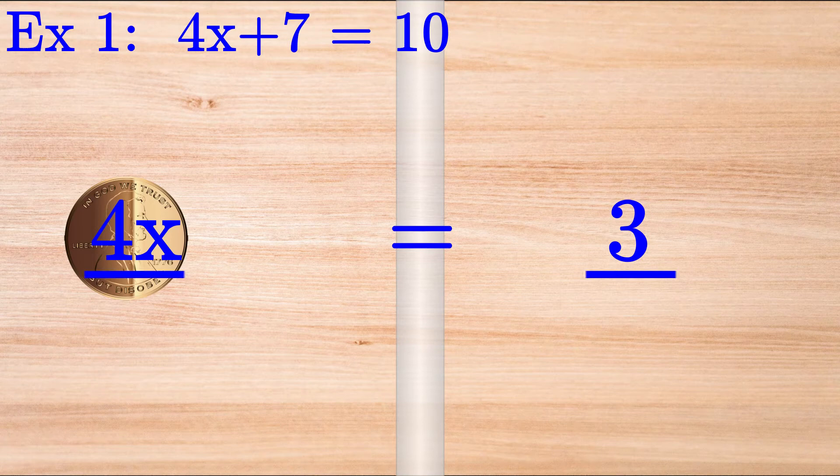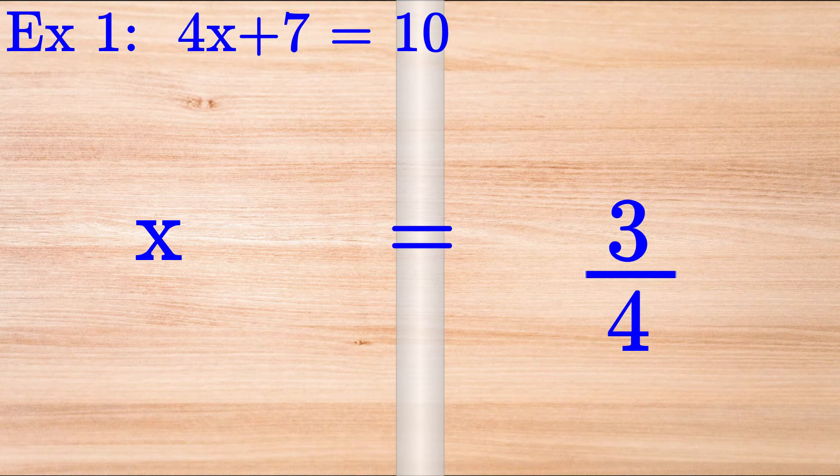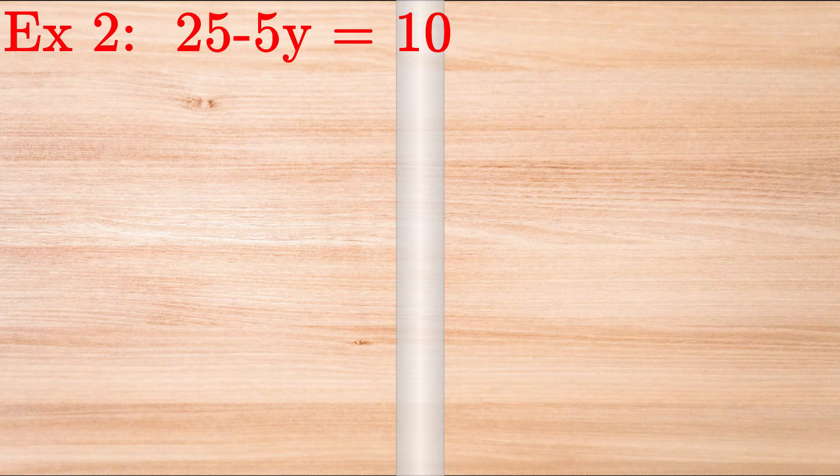We see that 4X equals 10 minus 7, which is equal to 3. Dividing the entire equation by 4, we see that X is equal to 3 over 4, 3 fourths. That's it! Let's try another example.